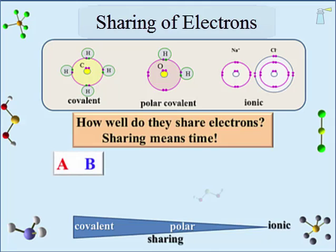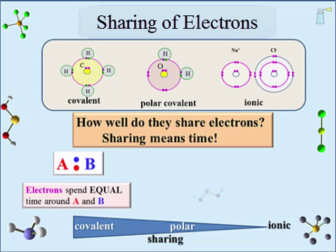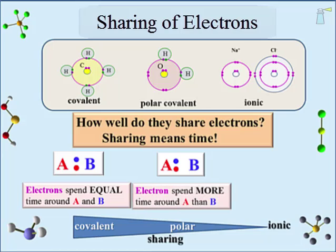Another way to look at this: atoms A and B each bring one electron to the covalent bond, and both electrons spend the same amount of time around atom A as atom B — drawn here exactly between A and B. The 'co' in covalent bond means share. For the polar covalent bond using the same two atoms, we draw the shared electrons closer to atom A — remember that sharing is about time. This says the shared electrons spend more time around atom A than atom B.